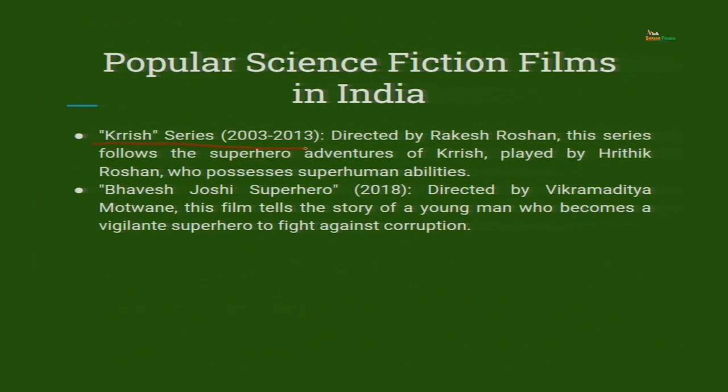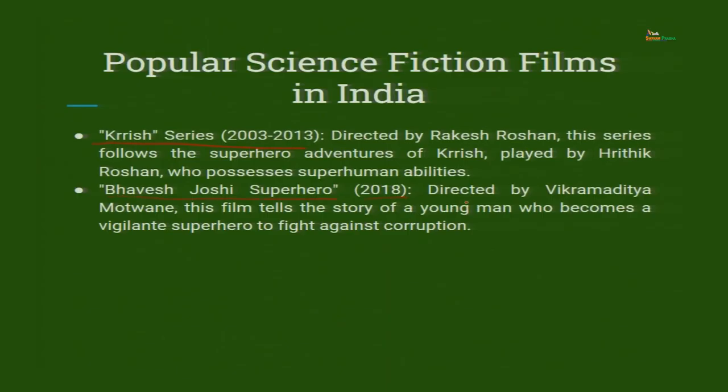The Krrish series started with the release of Koi Mil Gaya, directed by Rakesh Roshan. The series follows the superhero adventures of Krrish, played by Hrithik Roshan, who possesses superhuman abilities. Krrish is the son of the previous autistic boy Rahul from Koi Mil Gaya. Rahul becomes better and a scientist, goes to the US, where people exploit his brilliant scientific skills to build a computer which can predict the future. That person leaves behind his son, who grows up and finds out about the entire plot — a wonderful and very entertaining story. Bhavesh Joshi Superhero, released in 2018, directed by Vikramaditya Motwane — this film tells the story of a young man who becomes a vigilante superhero to fight against corruption.